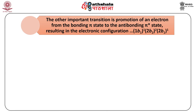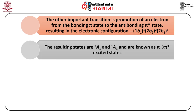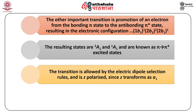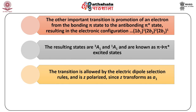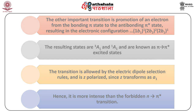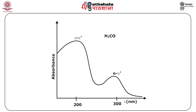The other important transition is the π→π* excited state, involving promotion of an electron from the bonding π (1b1) to the anti-bonding π* (2b1) state. The resulting excited configuration gives states ³A1 and ¹A1, known as π→π* excited states. This transition is allowed by the electric dipole selection rules and is z-polarized since z transforms as A1. Hence it is very intense — much more intense than the forbidden n→π* transition — and involves higher energy, occurring at a shorter wavelength of around 187 nm.